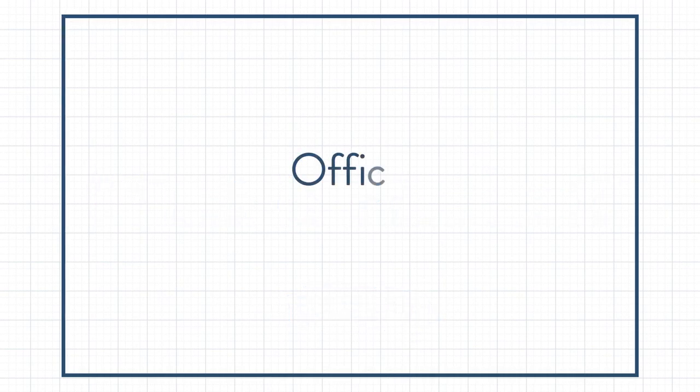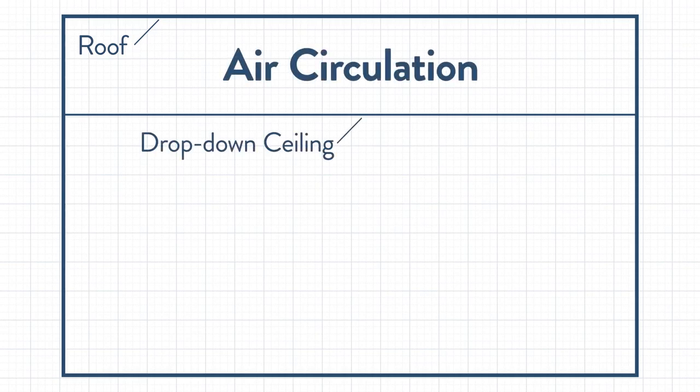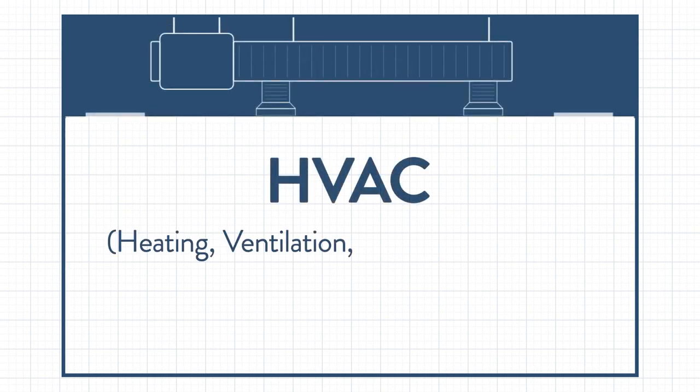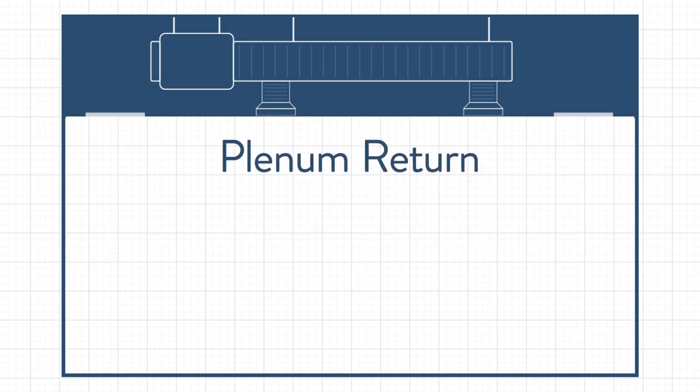A plenum is a separate space in a building, typically between the building's roof and a drop-down ceiling, that is primarily set aside for air circulation. This plenum space is purposefully designed to house HVAC equipment. In the HVAC world, these spaces are often referred to as plenum returns, but you might also hear it referred to as a plenum ceiling, a plenum space, or simply as the plenum.